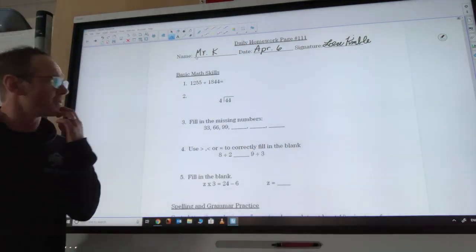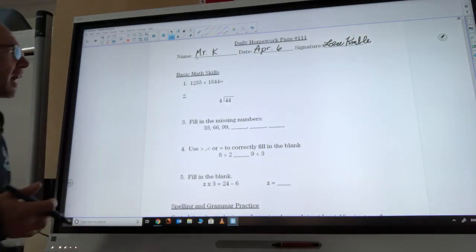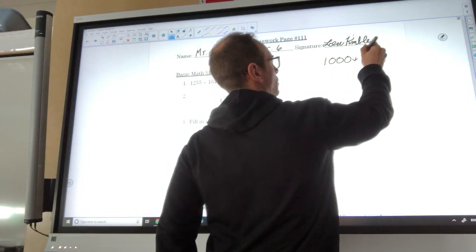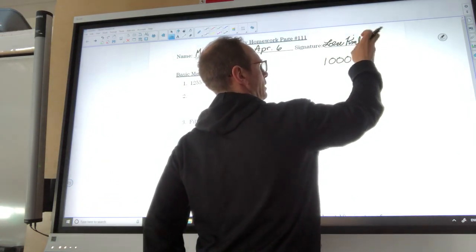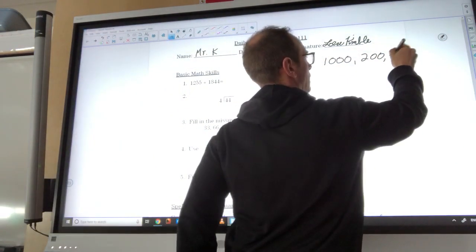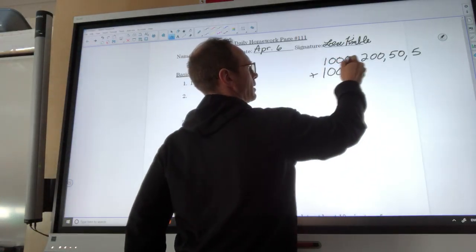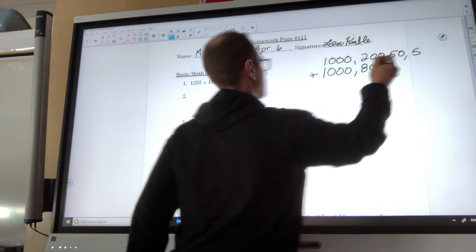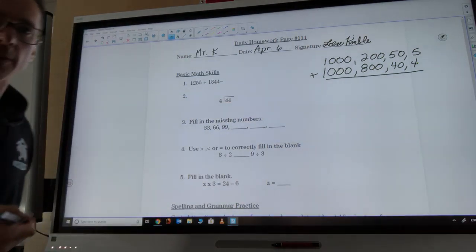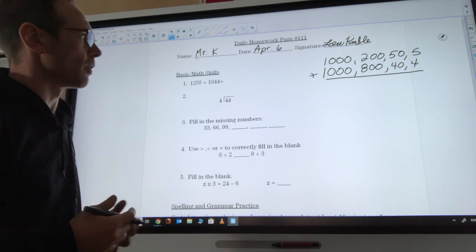So our first question says 1,255 plus 1,844. We talked about lots of different ways to do this. I'm going to show you it using expanded form. So 1,200, I'll just make that a comma instead, 250 and 5. We're going to add 1,844. By the way, before I even start doing any more of the adding, I should do some kind of estimate so that I know about what my answer should be.